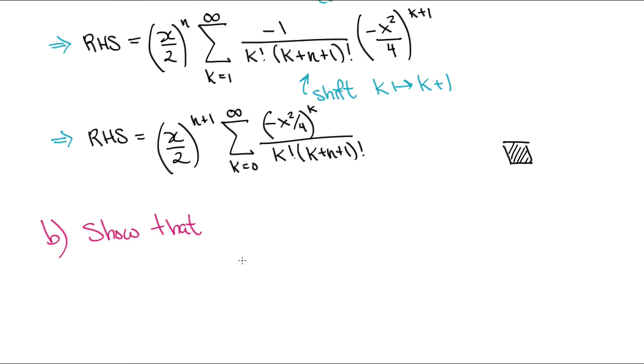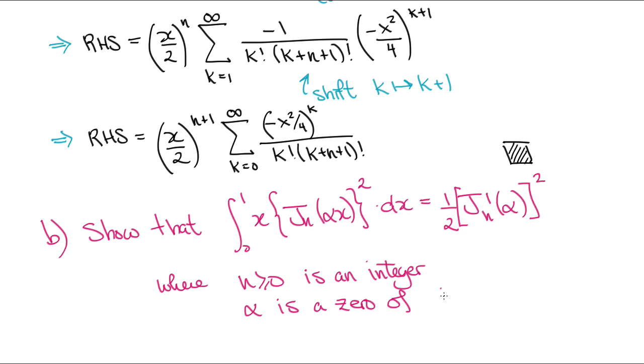For question 1b, let's assume that alpha is a zero of the Bessel function of degree n of x, and we'd like to show that the integral from 0 to 1 of x times the Bessel function squared equals 1 half times the derivative of the Bessel function evaluated at alpha squared.